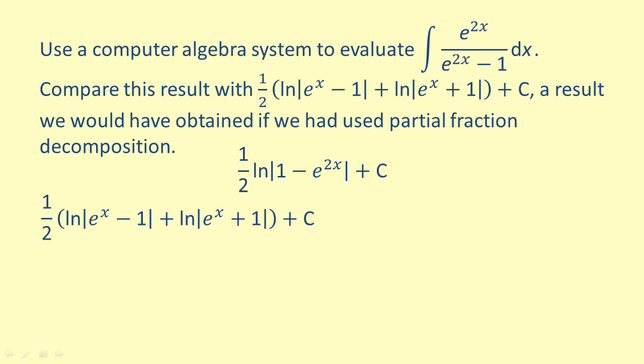So, multiplying the arguments, we get 1 half times the natural log of the absolute value of e to the 2x minus 1 plus c.